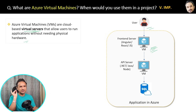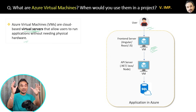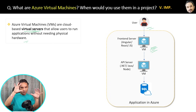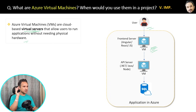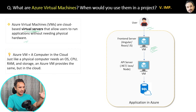A very simple analogy: think of an Azure VM as a computer present in the cloud — like a server. Just like a physical computer which needs an operating system, CPU, RAM, and storage — all of that together is called a virtual machine. I have written the same explanation here so you can easily revise it later.